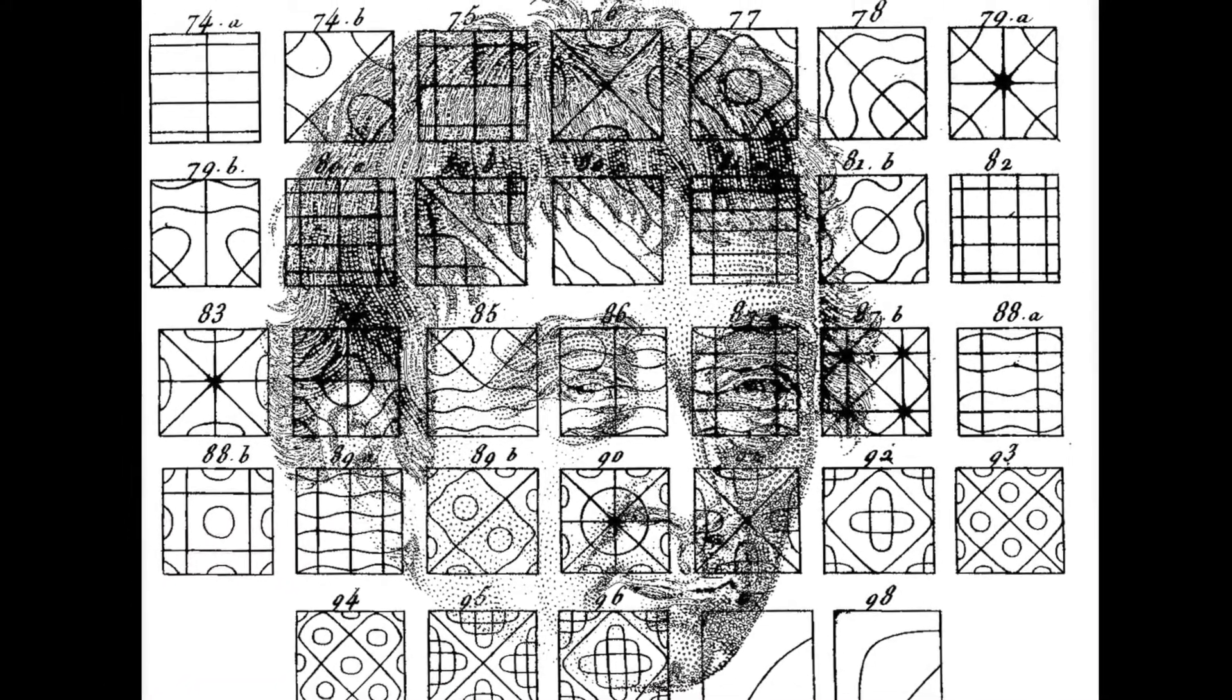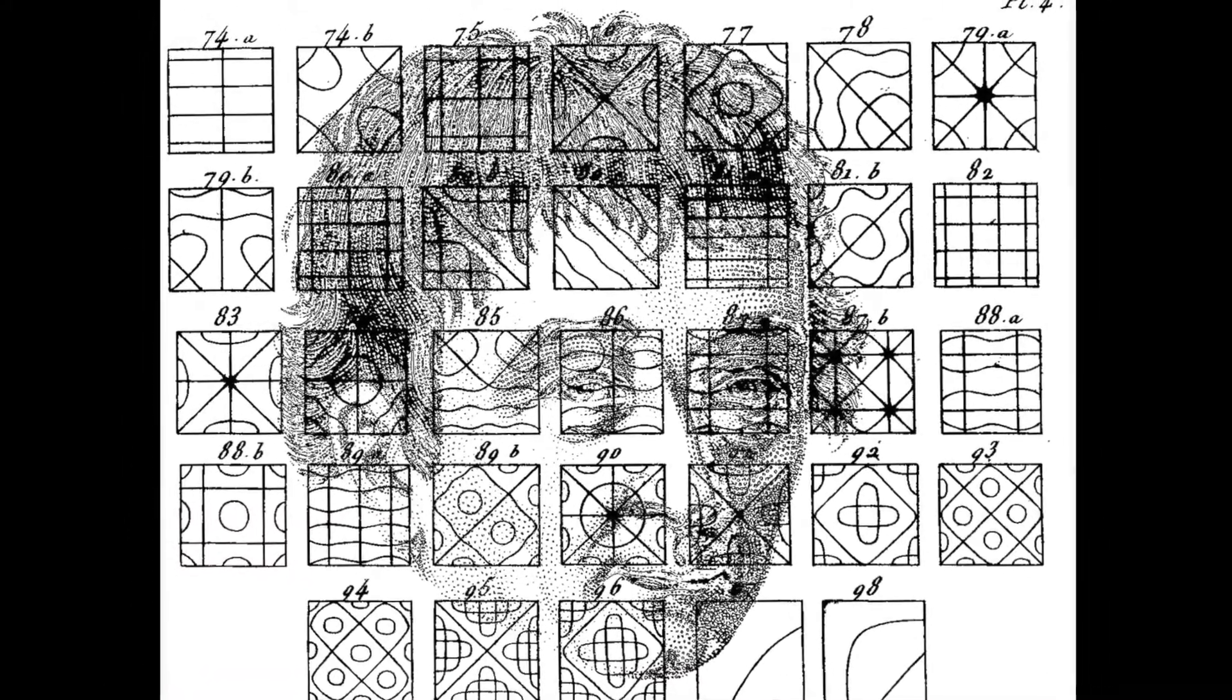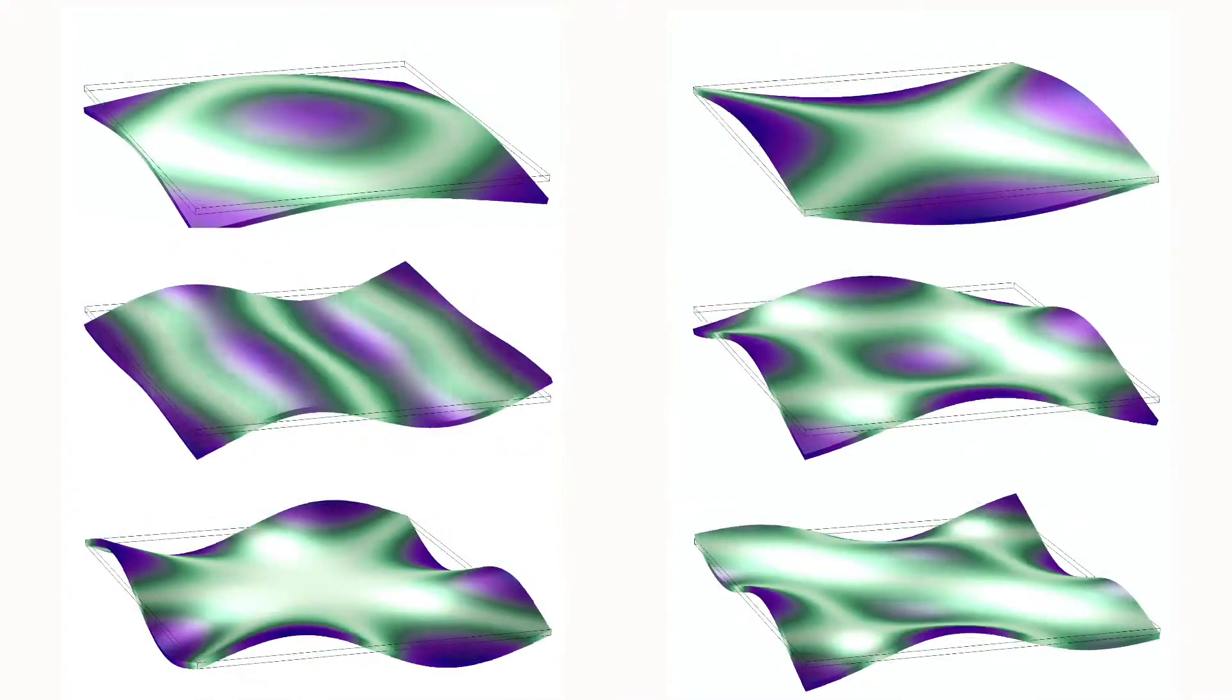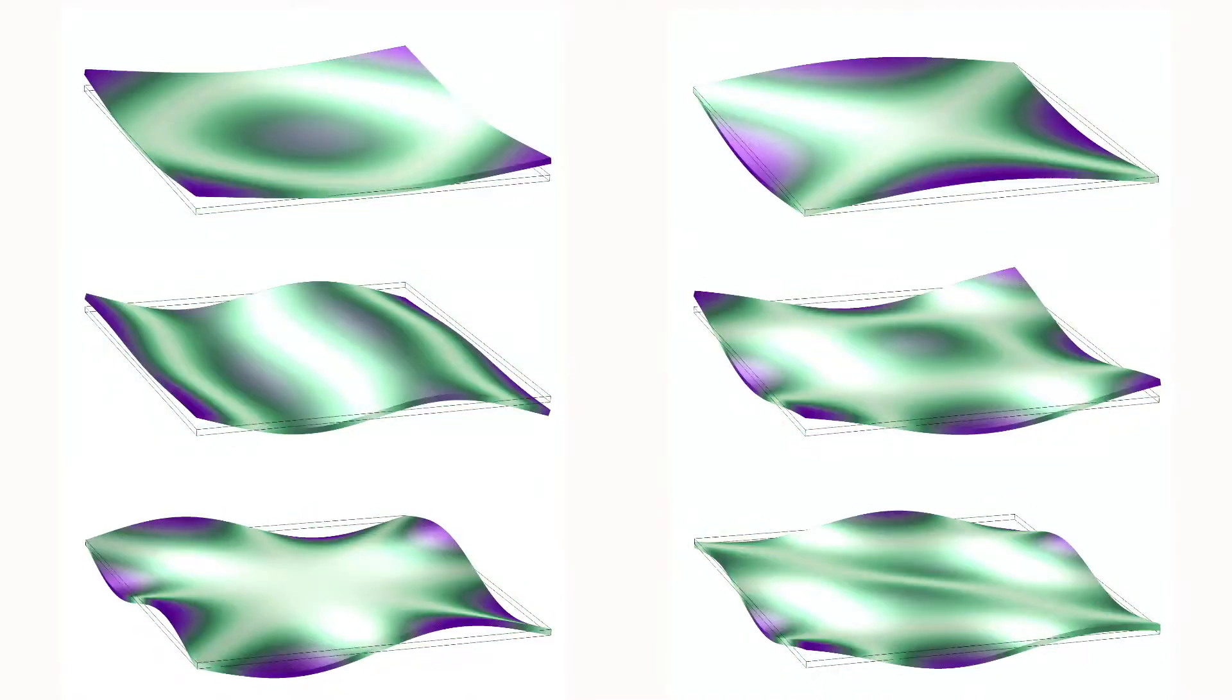He showed how a plate or membrane has specific regions which vibrate in opposite directions when excited at different resonant frequencies. In between those regions are nodes, lines of no displacement.